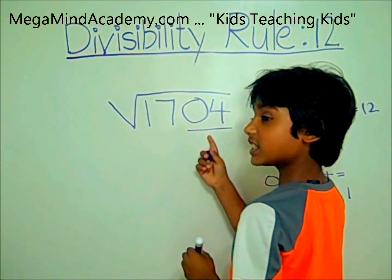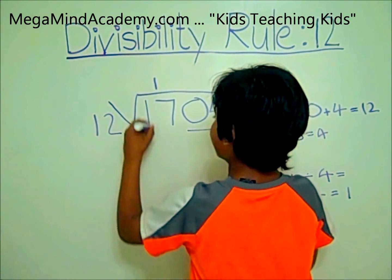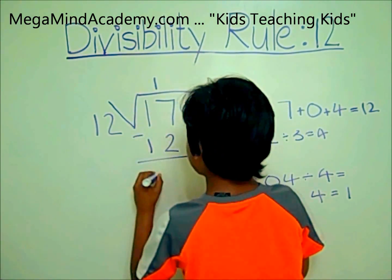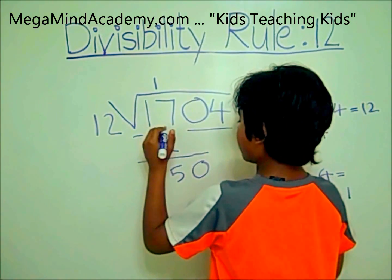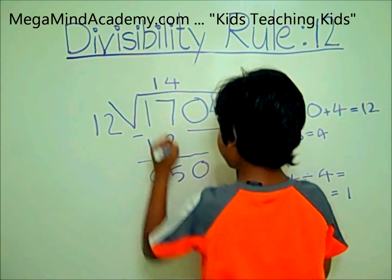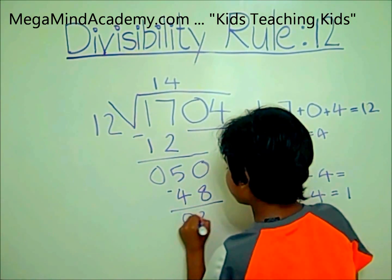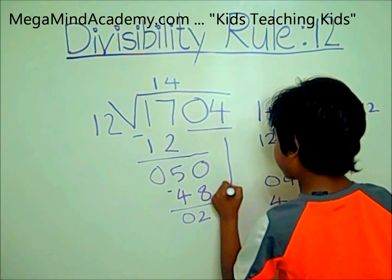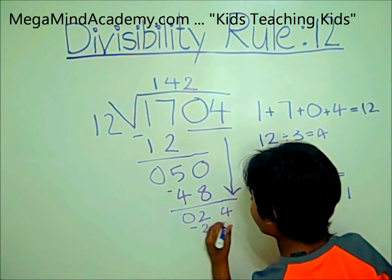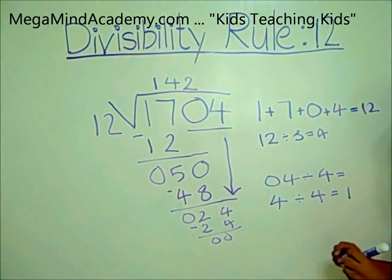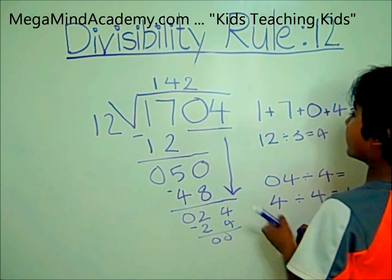1,704 goes inside the division sign and 12 goes outside. 12 times 1 is 12. 17 minus 12 equals 5, then 0 comes down. 12 times 4 is 48. 50 minus 48 equals 2, then 4 comes down. 12 times 2 is 24. 24 minus 24 equals 0. So that means 1,704 is divisible by 12.